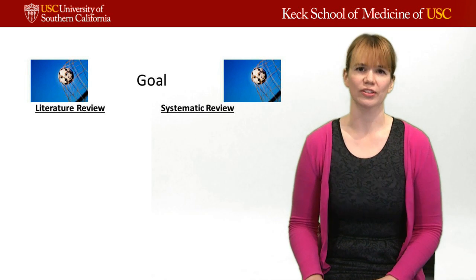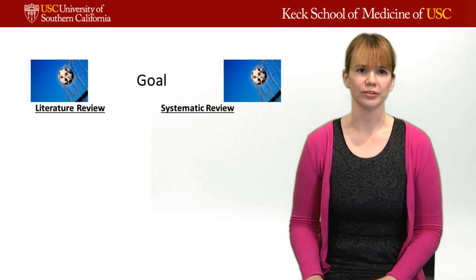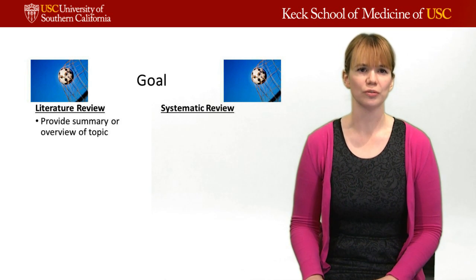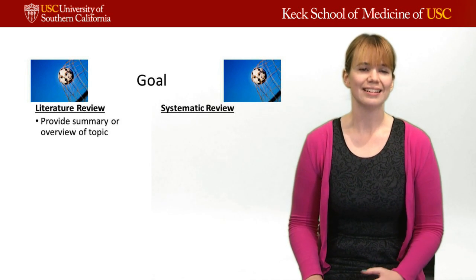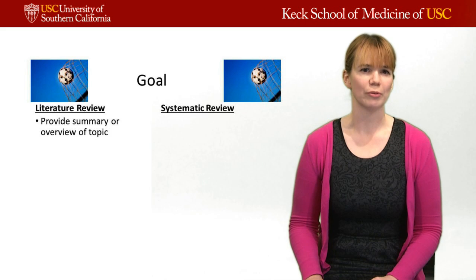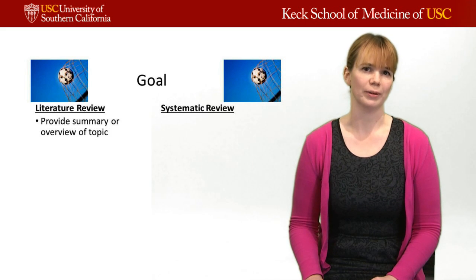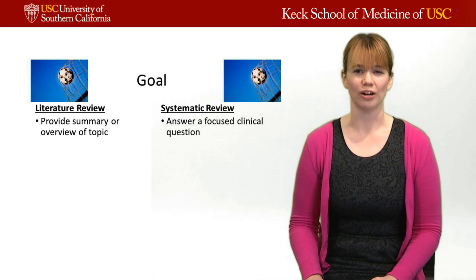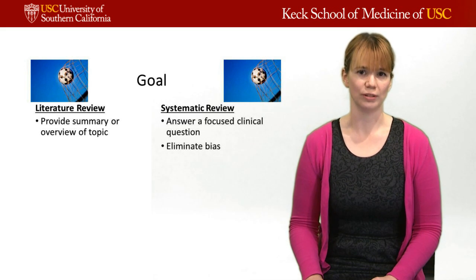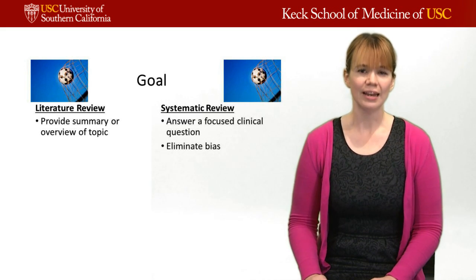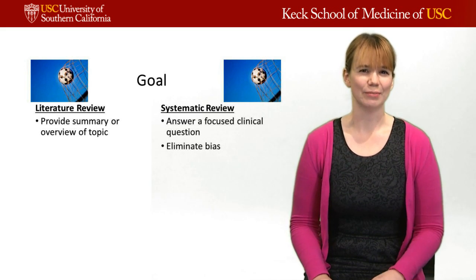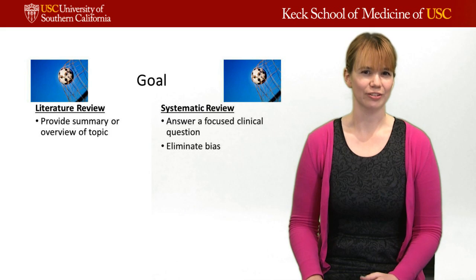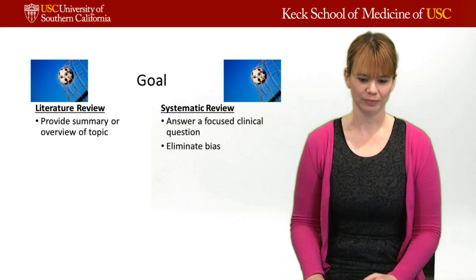What's the goal of these two different article types? A literature review is simply to provide a summary or overview of a topic. Whereas a systematic review is trying to answer a focused clinical question that can be used to treat patients, and to eliminate the bias of human nature.